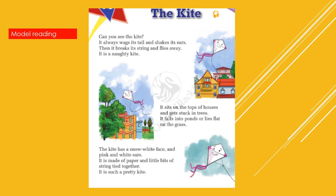Can you see the kite? It always wags its tail and shakes its ears. Then it breaks its string and flies away. It is a naughty kite. It sits on the tops of houses and gets stuck in trees. It falls into ponds or lies flat on the grass.